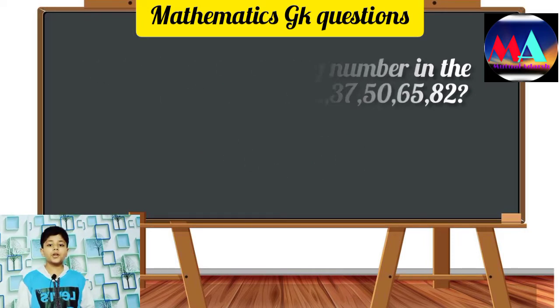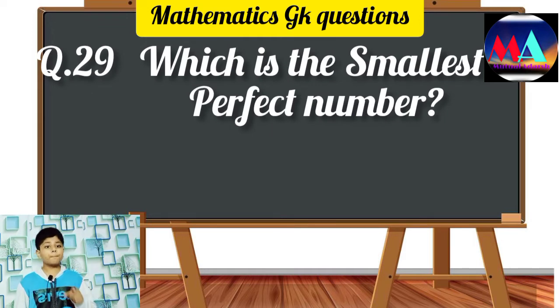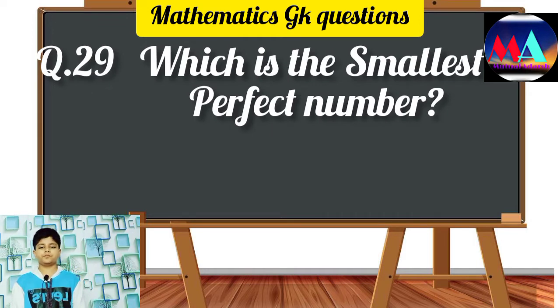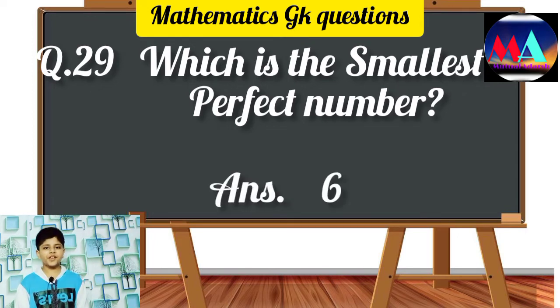Question number 29: Which is the smallest perfect number? Answer: 6.